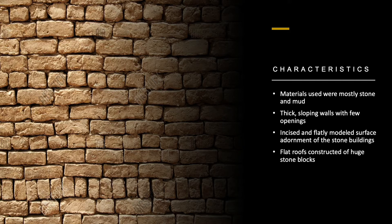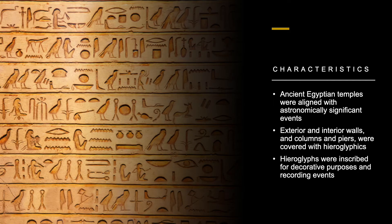Ancient Egyptian temples were aligned with astronomically significant events, such as solstices — when the Sun reaches its most northerly or southerly exclusion relative to the celestial equator — and equinoxes, when the equatorial plane of Earth passes the equator of the Sun. These precise measurements were so important that they were sometimes performed by the pharaohs themselves. Exterior and interior walls, as well as columns and piers, were covered with hieroglyphic and pictorial frescoes and carvings painted in brilliant colors. These colors were made from crushing the petals and leaves of exotic plants grown near the Nile River.